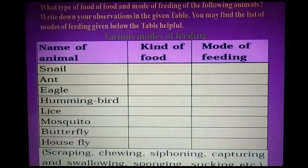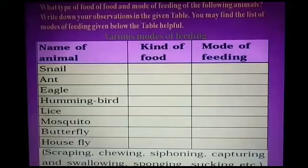Mosquito: the kind of food is blood, and the mode of feeding is sucking. Butterfly: the kind of food is nectar, and the mode of feeding is siphoning. Housefly: mode of feeding is siphoning also.